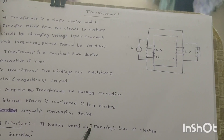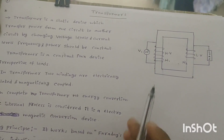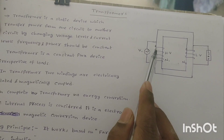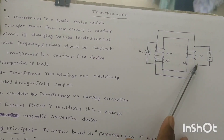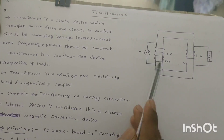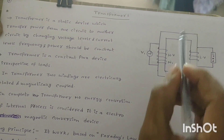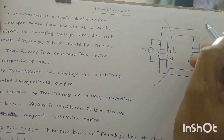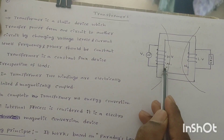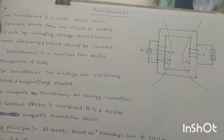Good morning all. Now I am going to explain about transformers. Here is a constructional view of a transformer. The definition of a transformer is: a transformer is a static device — there is no rotating part in a transformer. It is a static device which transfers power from one circuit to another circuit.